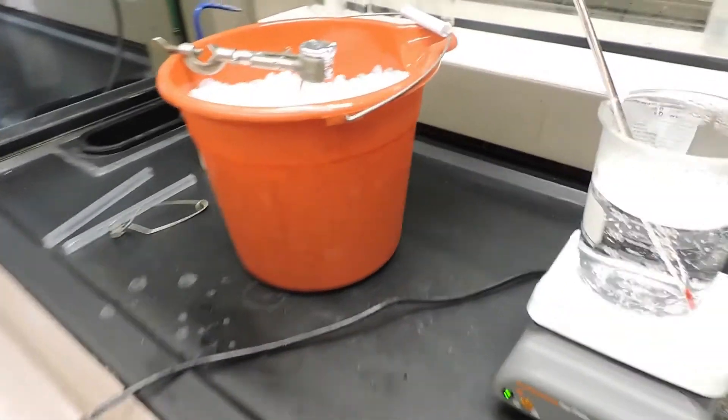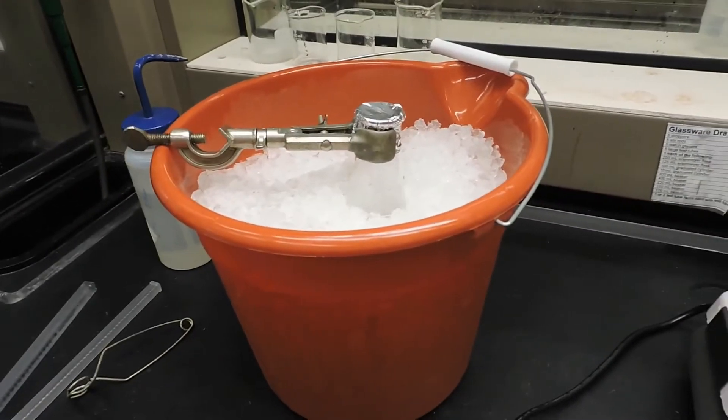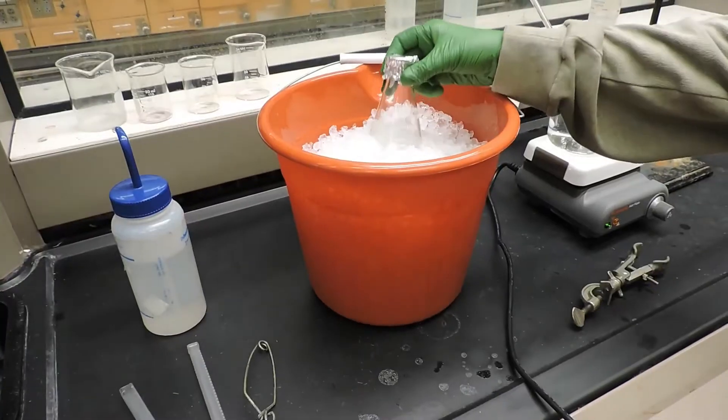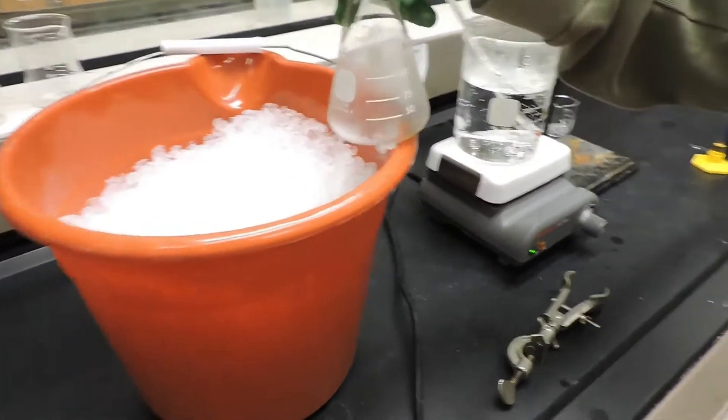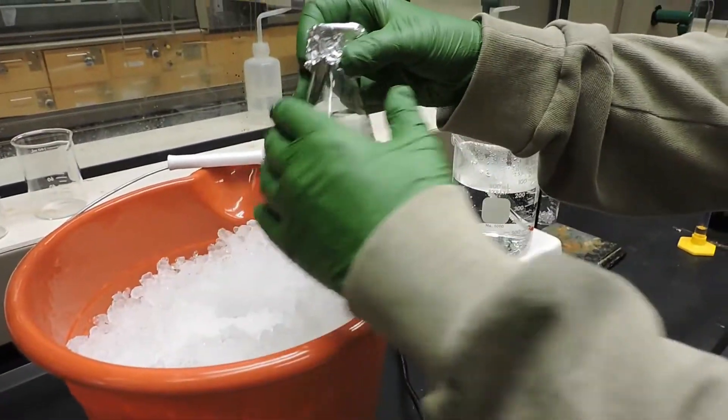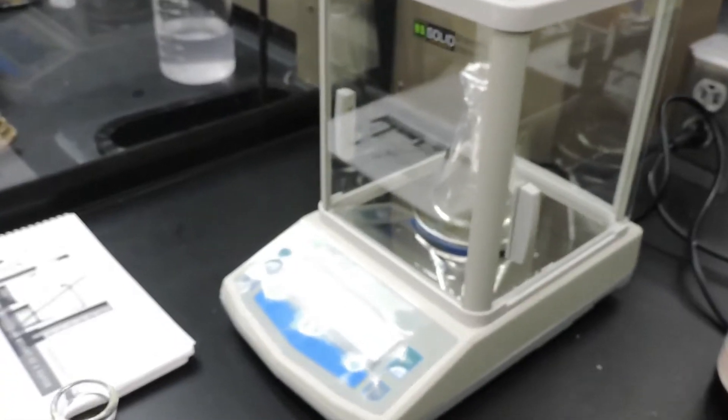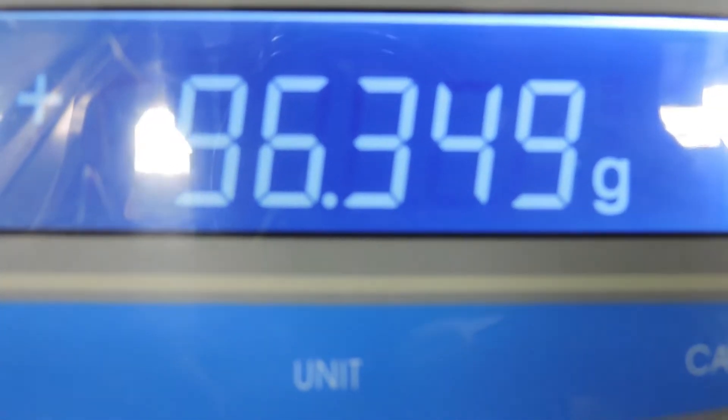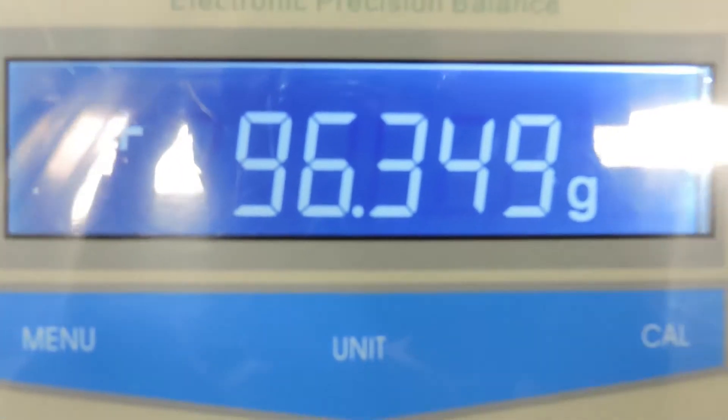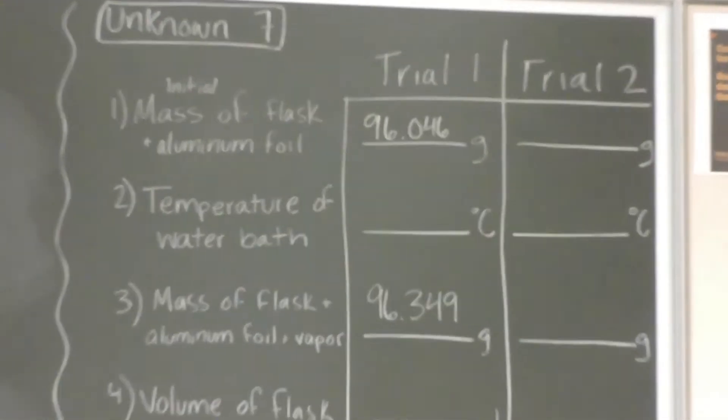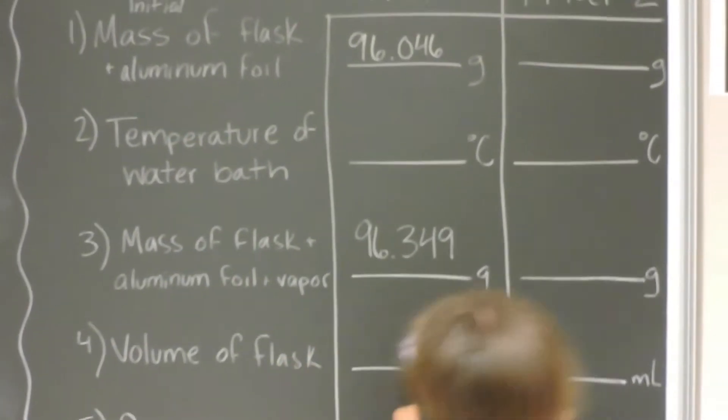Once the vapors have recondensed, we will dry the flask off and then find its mass again. Now that the flask has been sitting on ice for a little bit, the vapors inside have recondensed. We'll dry it off to find its mass, and the final mass is 96.349 grams. Our beginning mass was 96.046 grams, and our final mass is 96.349 grams.